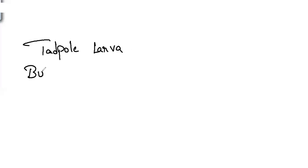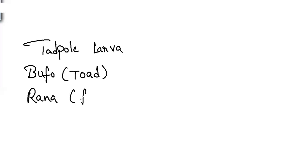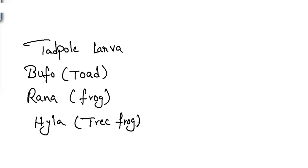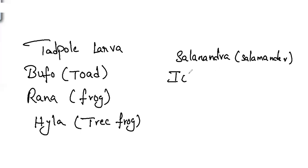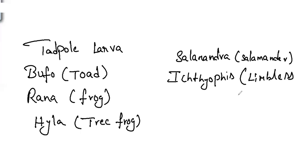Examples of Amphibia include Bufo (toad), which has poisonous glands on the skin; Rana (frog); Hyla (tree frog); and Salamandra (salamander). Ichthyophis is a limbless amphibian. Bufo, Rana, and Hyla come under Anura (absence of tail), while Salamandra and Ichthyophis come under Urodela (tailed amphibians).